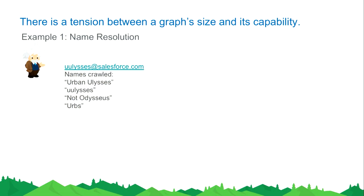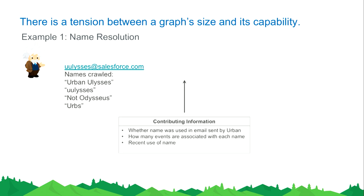Why is name resolution important? Most people on the graph — by an order of magnitude — are people who interact with our customers but aren't our customers themselves. So we really need to get this right. Using these signals, from our system you get a resolved name — in this case, Urban Ulysses — and we're pretty sure it's right.